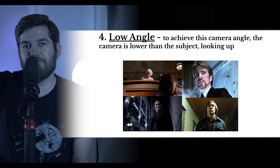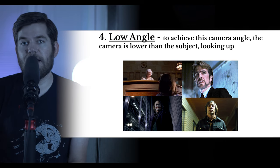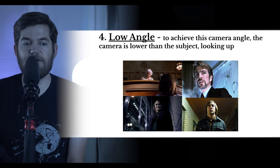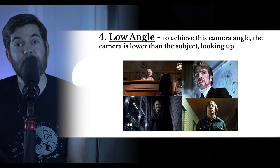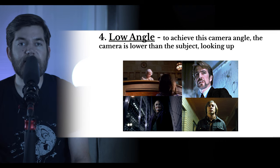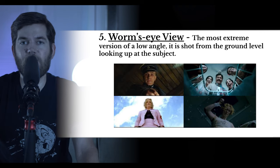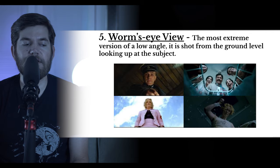Next is low angle — don't confuse it with high angle. A low angle means the camera is low, closer to the ground, looking up at the subject. This can make the subject look powerful and menacing; it's often used for a villain who's scary or a superhero who's impressive. The worm's eye view is the most extreme version — the camera is on the ground looking straight up. Birds eat worms, so bird's eye is up high and worm's eye is down low.